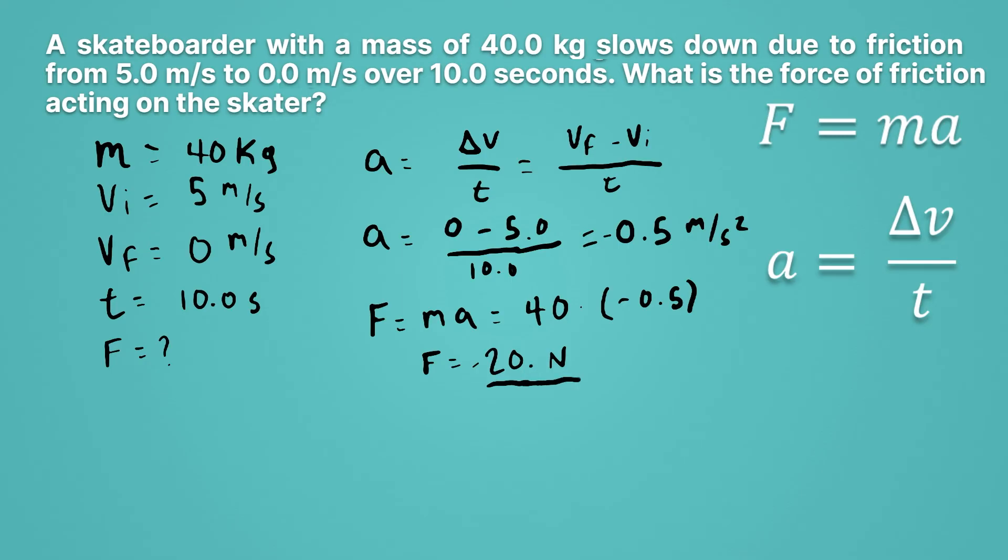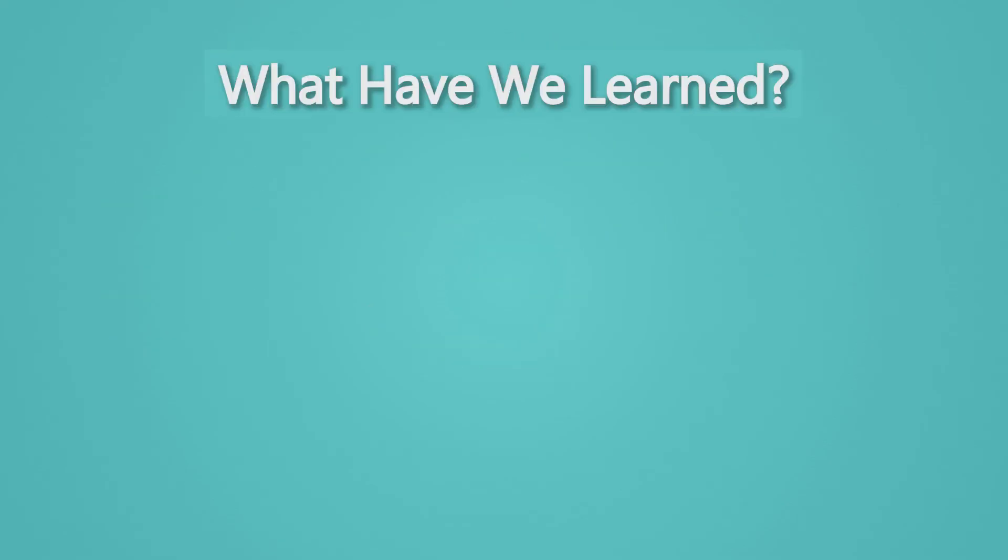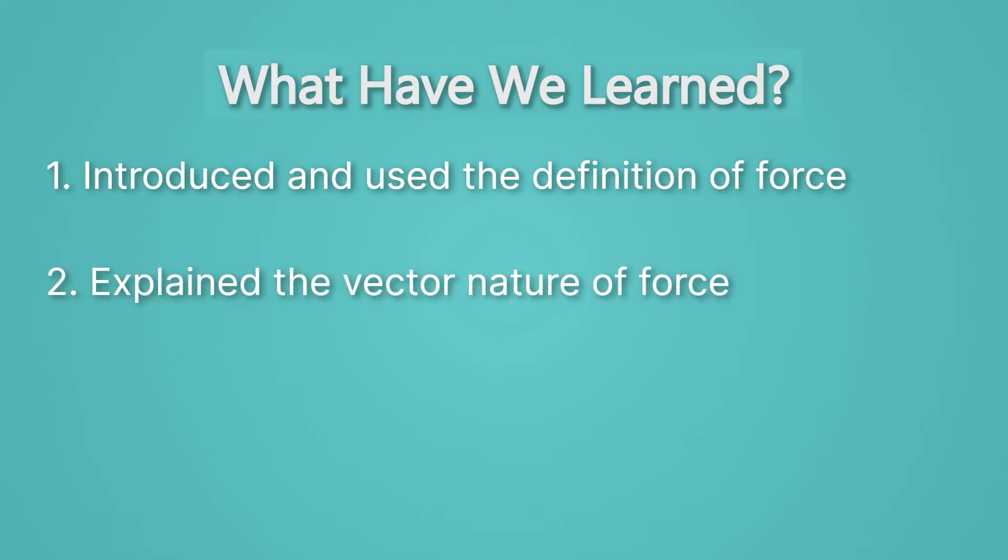Okay, so the force of friction in this case is minus 20 newtons. Let's sum up what we've learned. We've introduced and used the definition of force. We talked about how you can identify the presence of a force whenever you have acceleration. And how in some cases actually there can be a force present without motion. Usually then there's multiple forces present. Then we explained the vector nature of force. How force always has a direction. And then we introduced the unit for a force. The Newton.